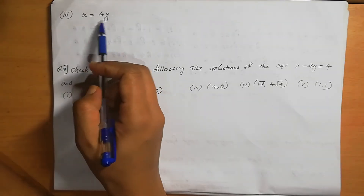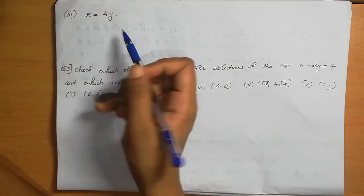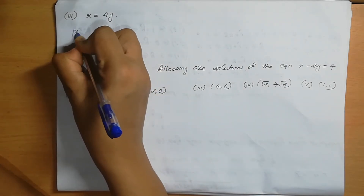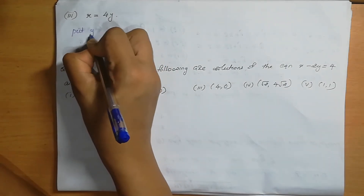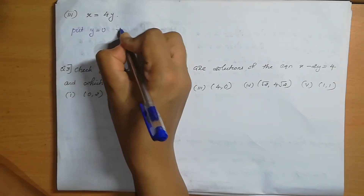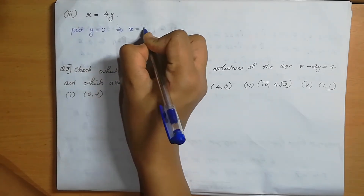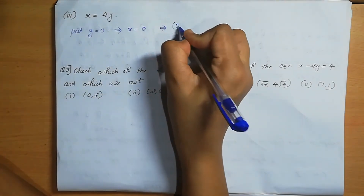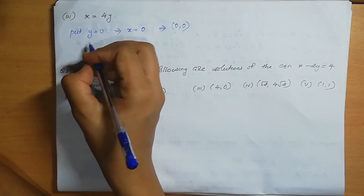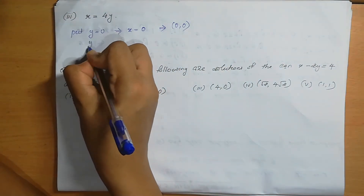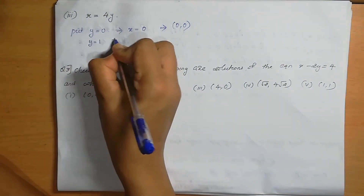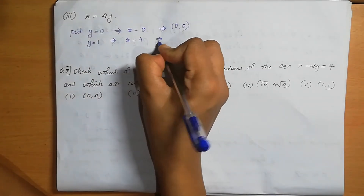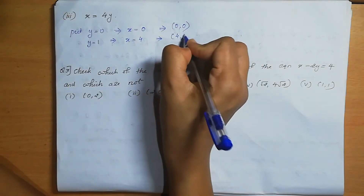Third equation: x = 4y. We need to find four solutions. Here, for each value of y we find the value of x. Put y=0: x = 4×0 = 0. The solution is (0, 0). Put y=1: x = 4×1 = 4. The solution is (4, 1) — x coordinate first, then y coordinate.